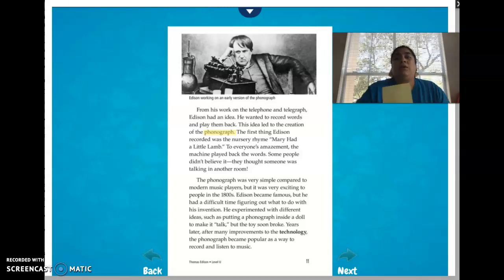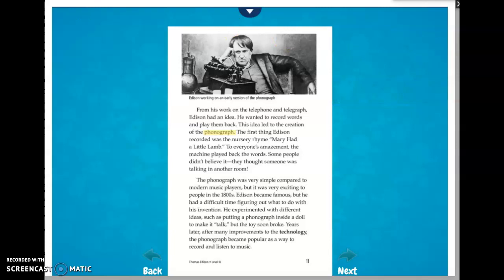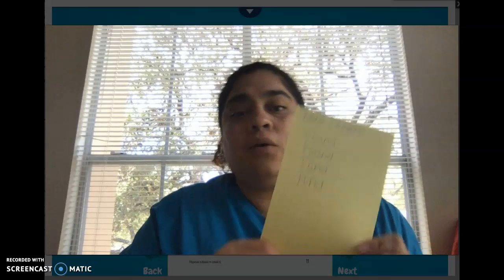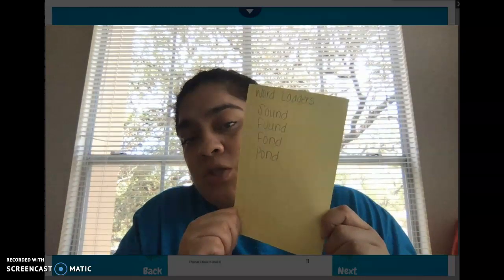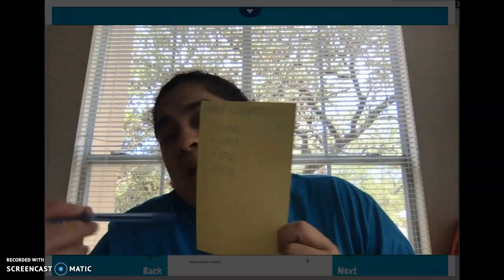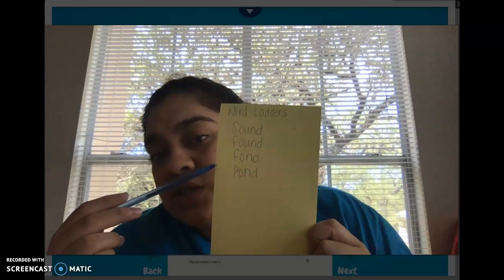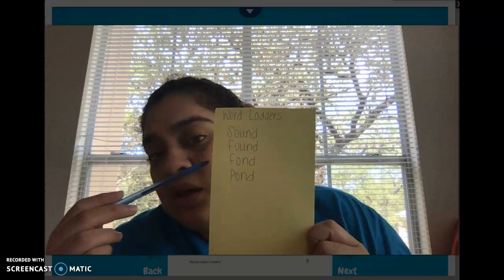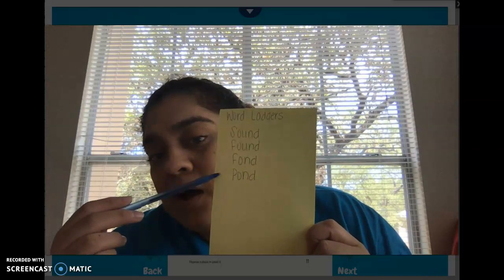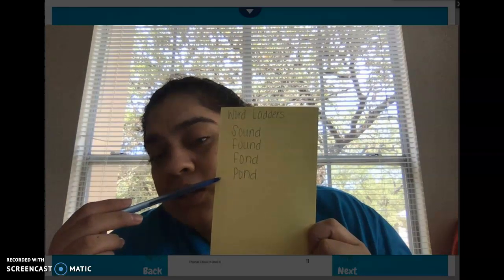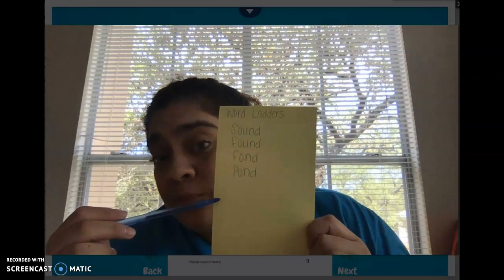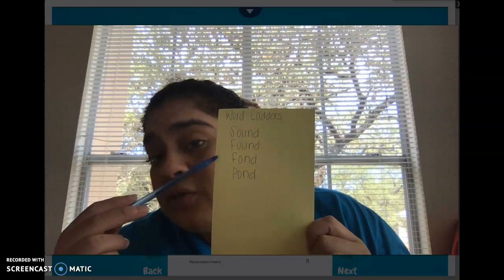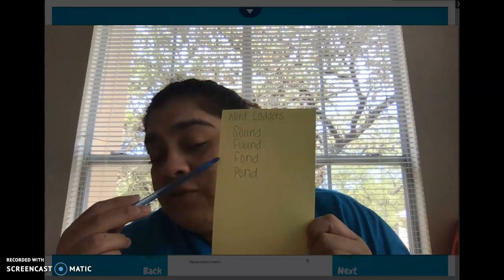We've been working with word ladders. Remember word ladders, you're taking a letter and it changes each time. So you have sound, found, found, pond, pond. Something is you also know that they rhyme which could be a key factor. So from sound to found I changed the first letter, from found to fond I got rid of the U, and from fond to pond I changed the F to P.